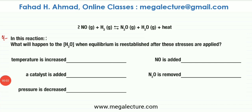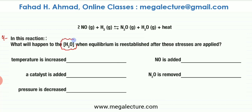Now we're going to start with question number four. The equilibrium reaction is 2NO + H2 producing N2O and H2O, all gases. The question is: what will happen to H2O when equilibrium is re-established after these stresses? In the forward direction, heat energy is being produced, so the forward reaction is exothermic. In the backward direction, N2O and H2O gain heat energy — so the backward reaction is endothermic.